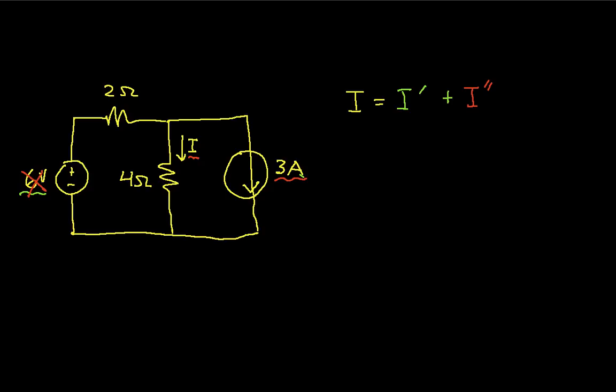In other words, the currents and voltages created in a circuit are the algebraic sum, or the superposition, of the currents and voltages created by each independent source.